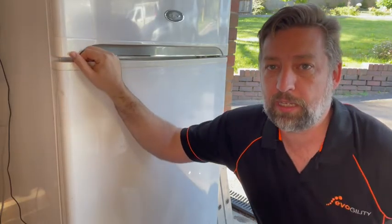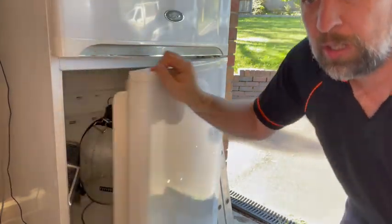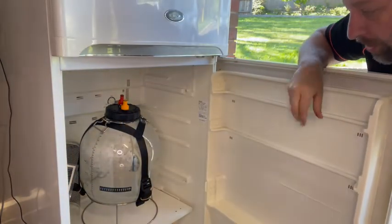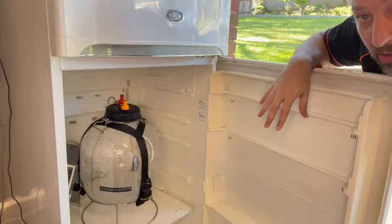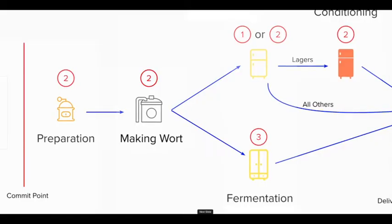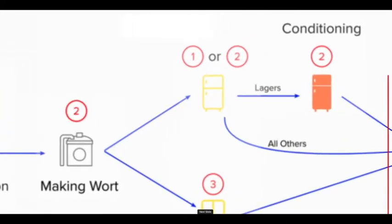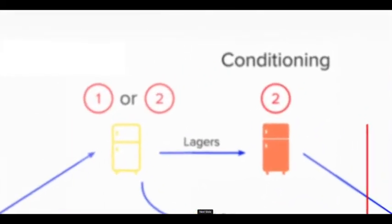Here we are with the fermentation fridge in its single fermenter configuration. As you can see, I can only ferment one beer in this fridge as it currently stands. Using the fridge in this method is really useful for our hoppy ales or perhaps our lagers with the two-vessel system — either way, they work better in this particular fridge.